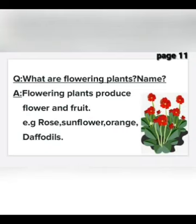Question number 3: what are flowering plants? Name them. Flowering plants produce flowers and fruits. These are rose, sunflower, orange.